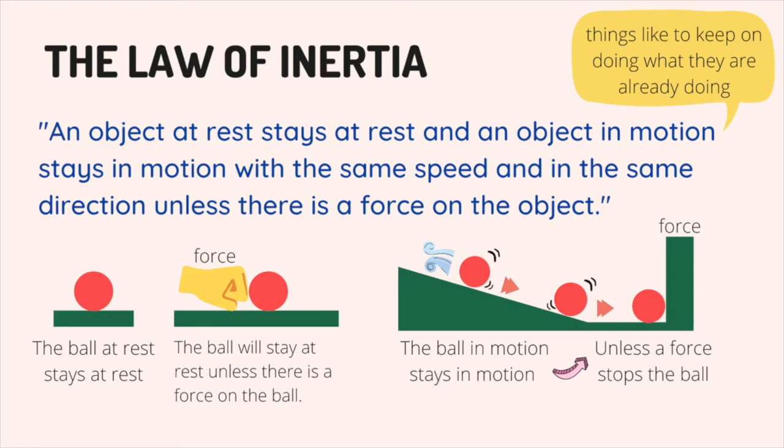In other words, if an object has inertia, it wants to keep doing what it is already doing unless a force like gravity or friction stops it. In the image, the ball at rest will stay at rest unless there is a force on the ball. The ball in motion will stay in motion unless a force stops the ball.